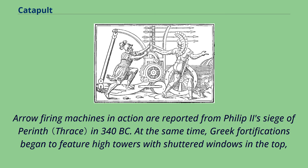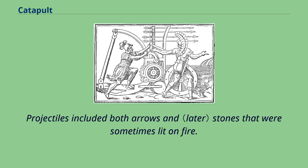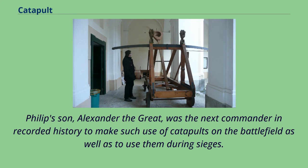Arrow-firing machines in action are reported from Philip II's siege of Perinthus in 340 BC. At the same time, Greek fortifications began to feature high towers with shuttered windows at the top, which could have been used to house anti-personnel arrow shooters, as in Aegosthena. Projectiles included both arrows and stones that were sometimes lit on fire. Onomarchus of Phocis first used catapults on the battlefield against Philip II of Macedon. Philip's son, Alexander the Great, was the next commander in recorded history to make such use of catapults on the battlefield as well as during sieges.